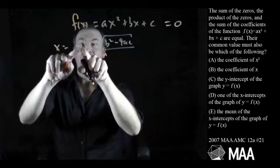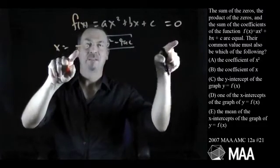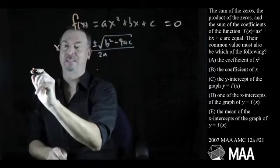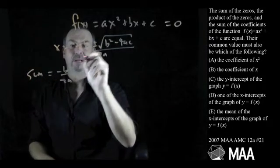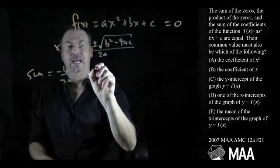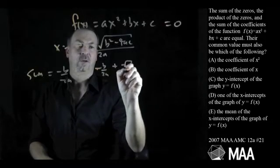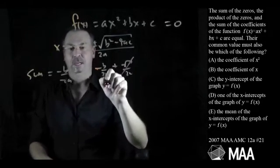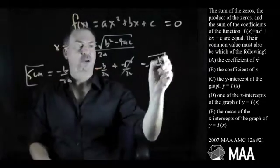In which case the sum of the zeros is negative b plus the square root over 2a plus negative b minus the square root over 2a. So the square roots will cancel out. So the sum of the zeros is negative b over 2a plus negative b over 2a. What is that? Negative b over a. The sum is negative b over a.